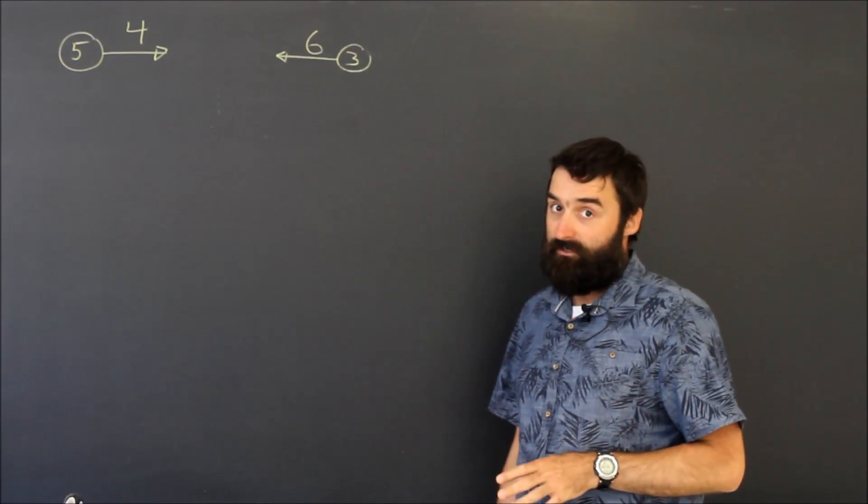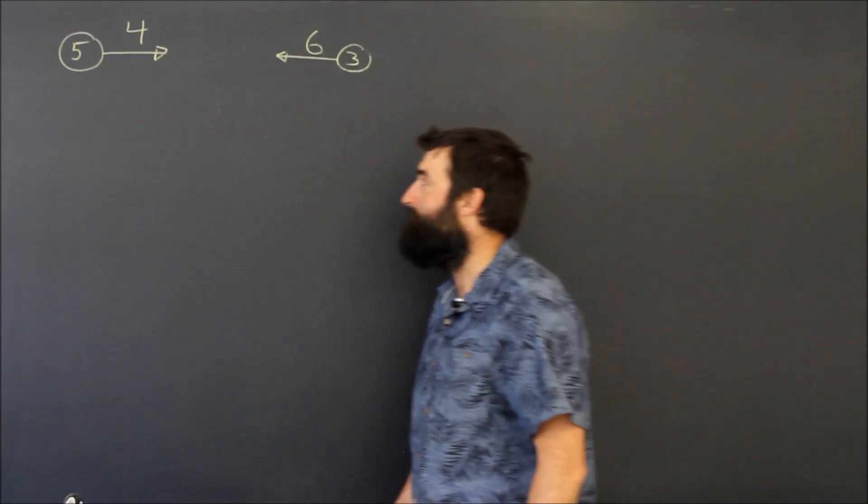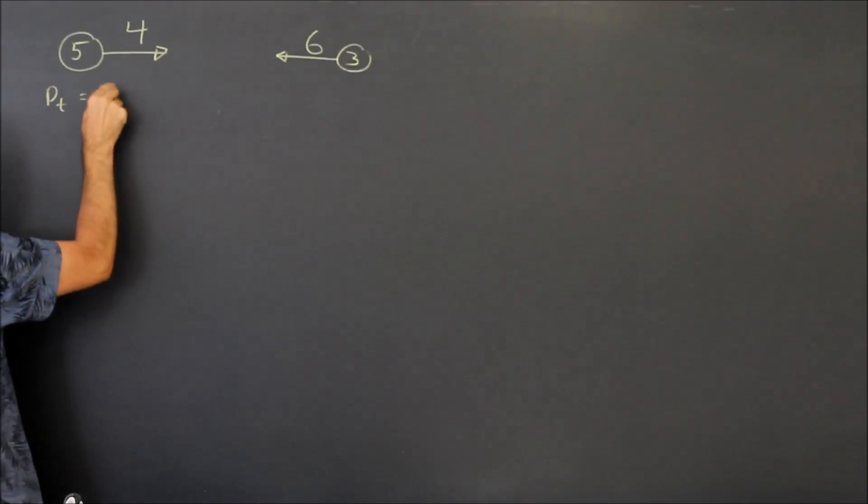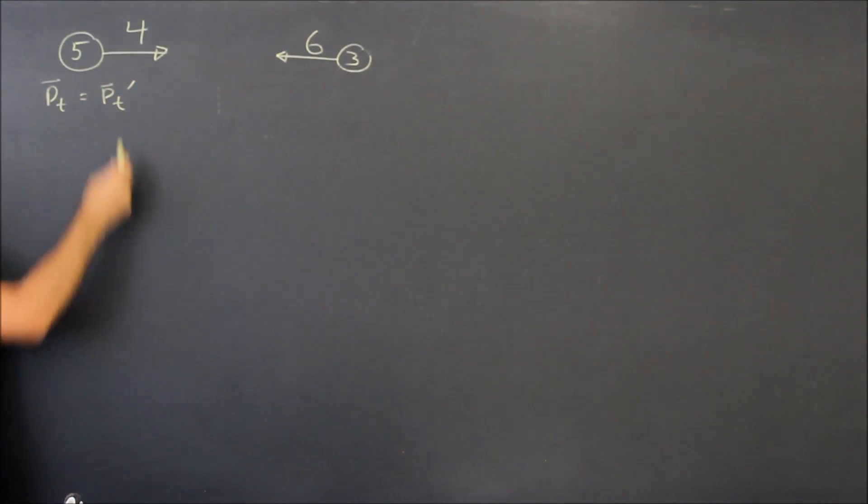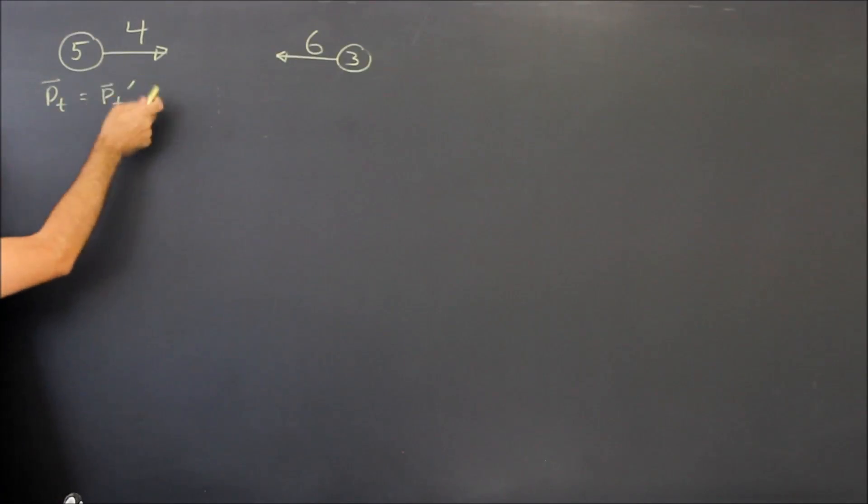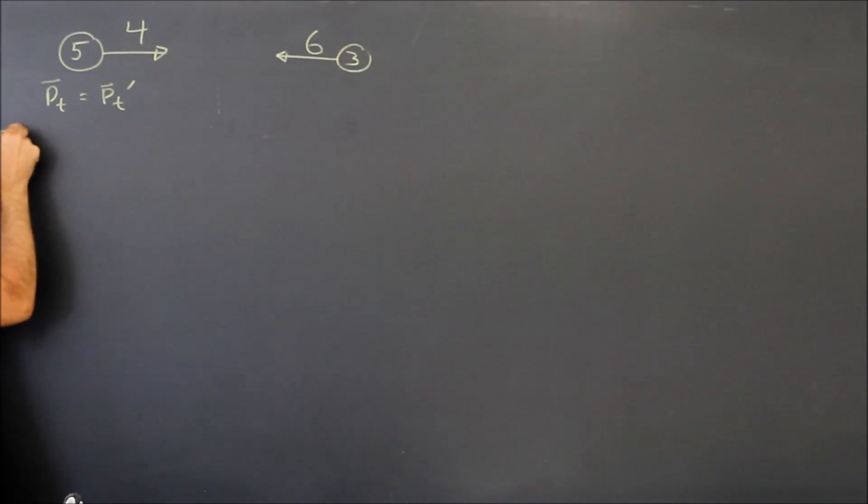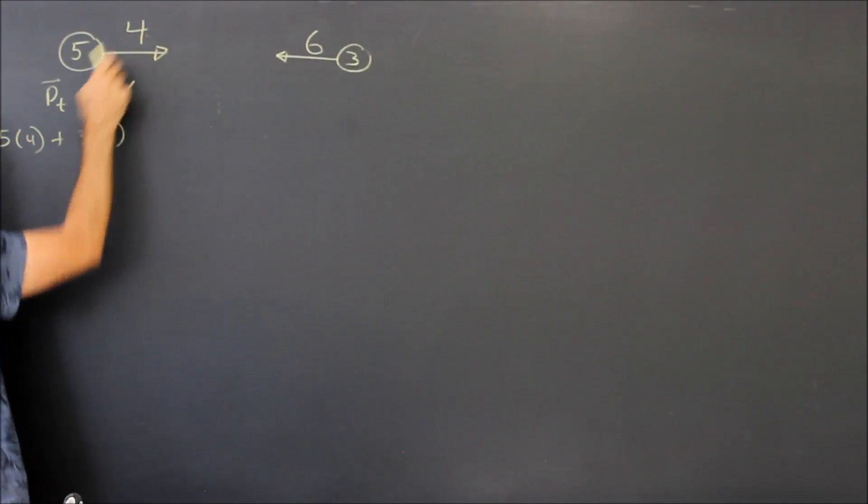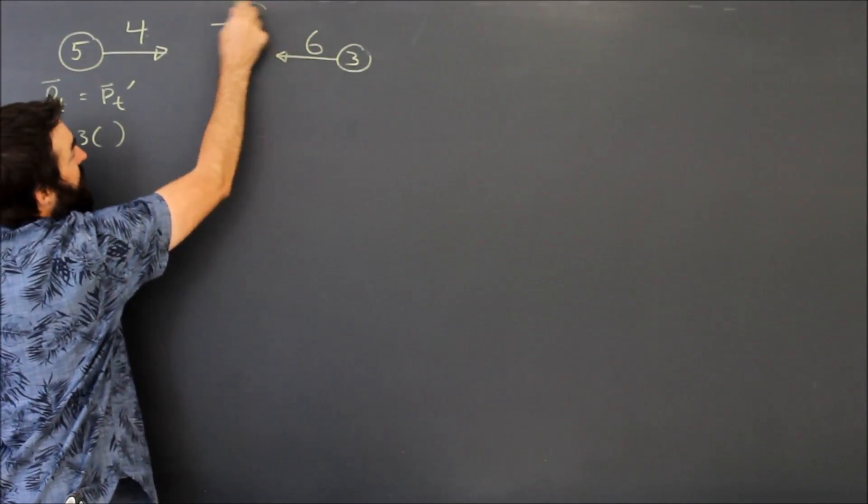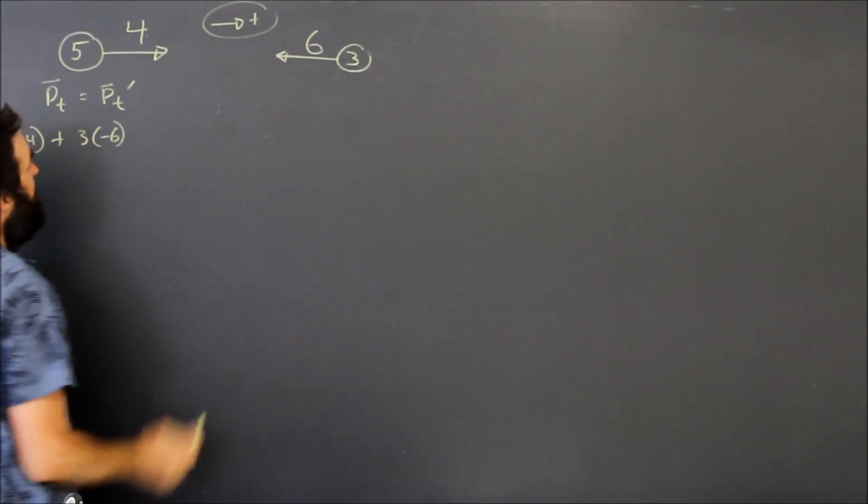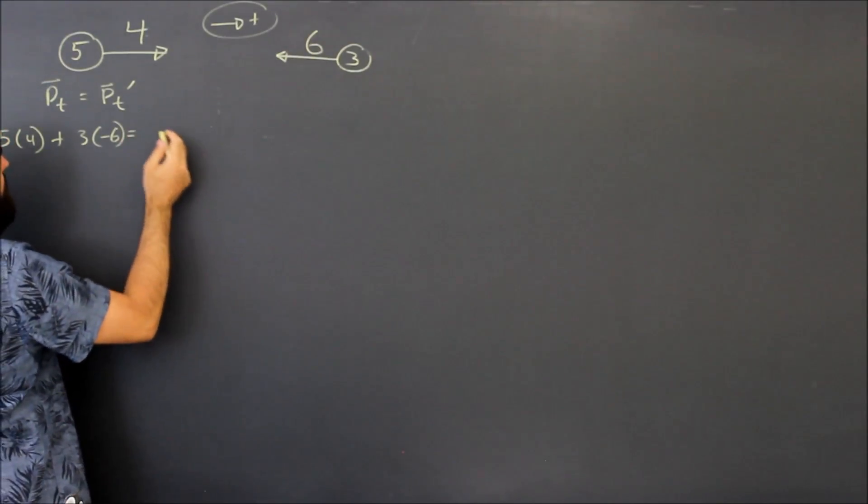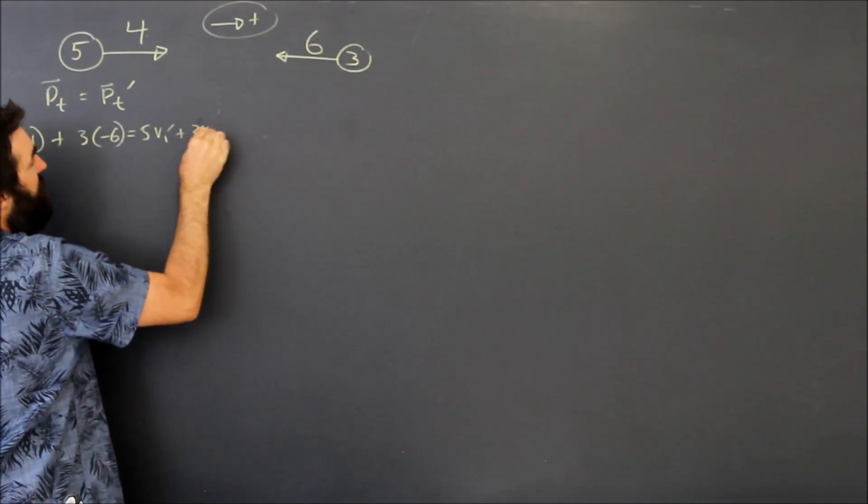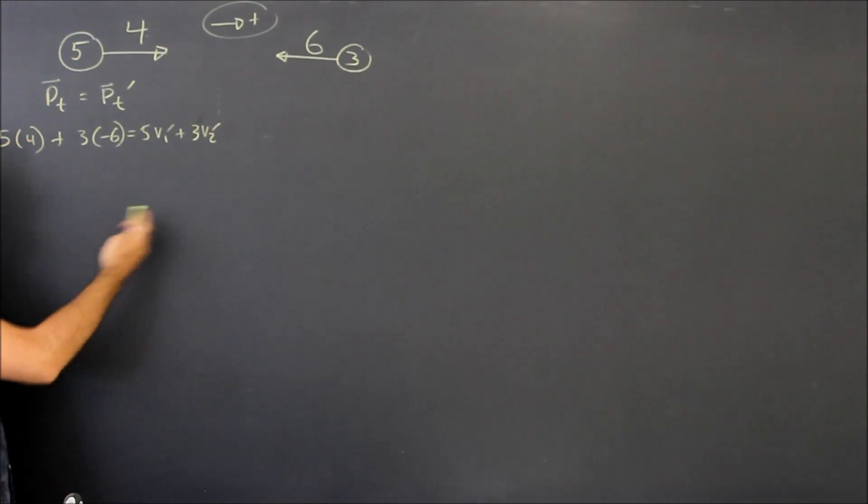Well, no matter what type of collision it is, momentum is going to be conserved, which means that the total momentum before is equal to the total momentum afterwards. Prime, as you know, means after. So shoving numbers in here I can see that the mass is five and the velocity is four and I'm going to add that to three times six. But if I've called four, four, then that means I'm assuming that to the right is positive. So I've got to call this guy's velocity negative six. And that's going to be equal to five v one prime plus three v two prime.